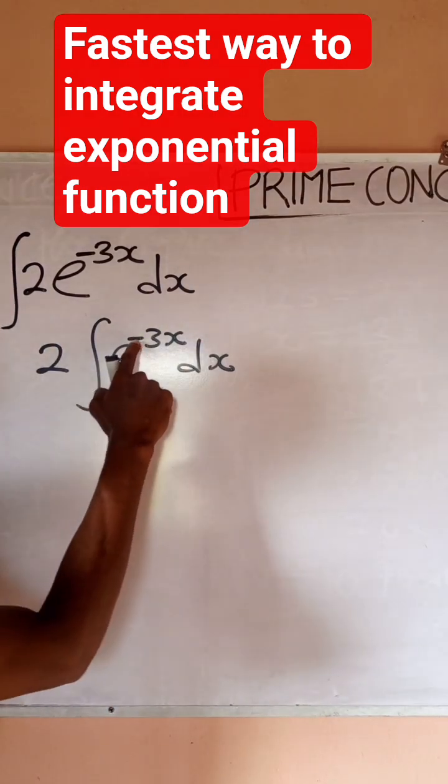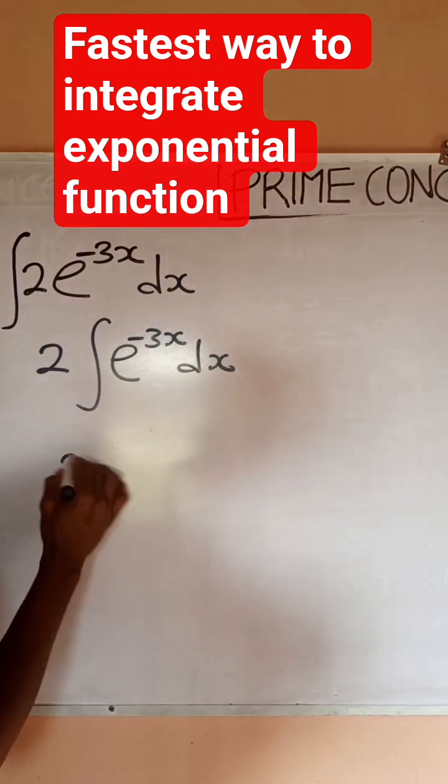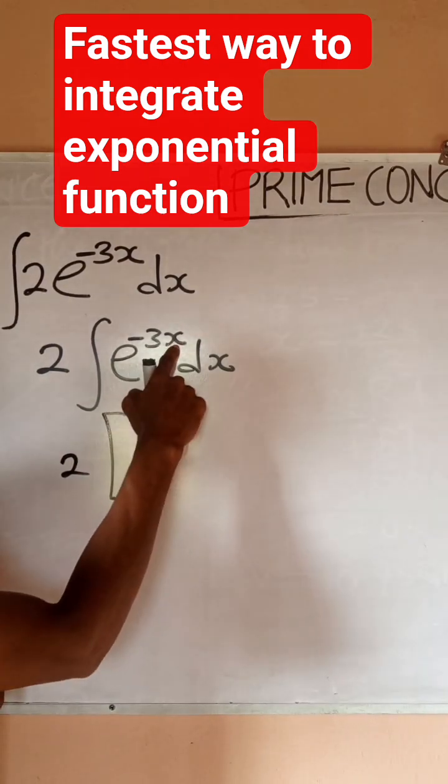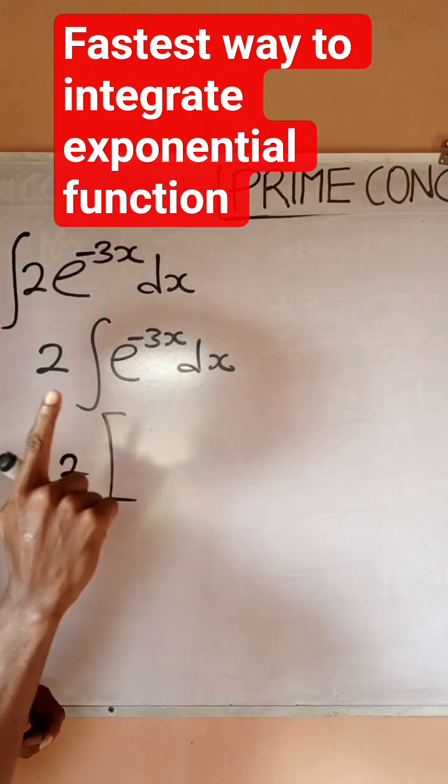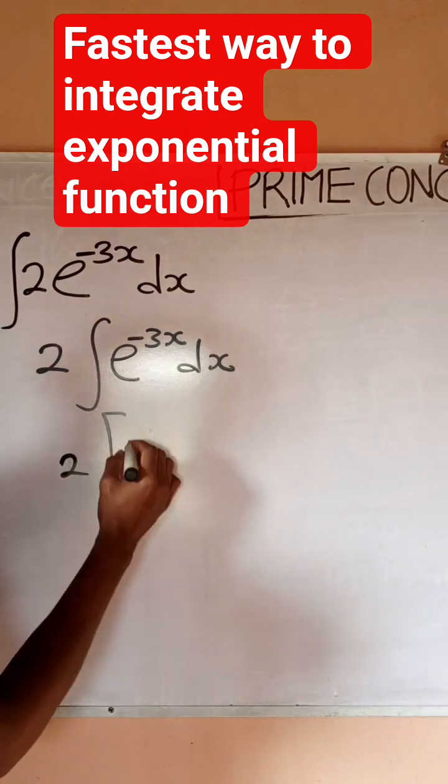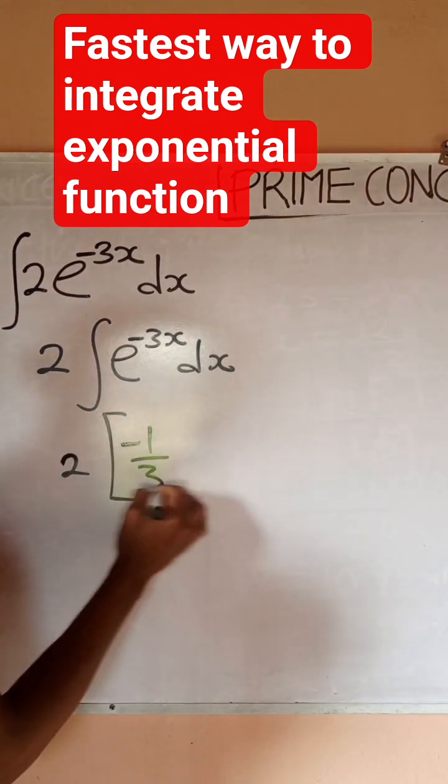So if I differentiate minus 3x, what would I have? If I differentiate minus 3x, I would have minus 3. Then when I invert it, I would have minus 1 over 3.